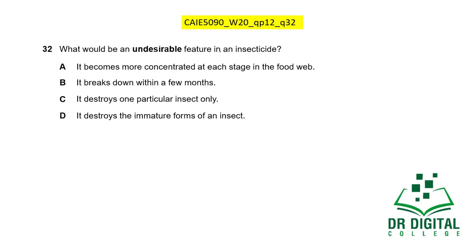In this question, what would be an undesirable feature in an insecticide? Option A: it becomes more concentrated at each stage in the food web — yes, this is bioaccumulation, which happens but is undesirable; we want insecticides to be effective against insects but not enter the food web. Option B: it breaks down within a few months — this is desirable biodegradability. Option C: it destroys one particular insect only — this is desirable specificity. Option D: it destroys the immature forms of an insect — also desirable, as killing nymphs and larvae is wanted. Options B, C, and D are all desirable characters. Only A is undesirable. The answer is A.